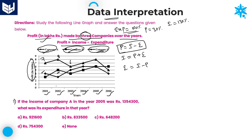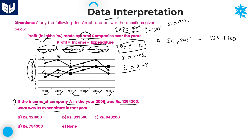Now look at the first question. If the income of company A in the year 2005 is 13,54,300, what was its expenditure? This particular income value is 13,54,300. What we need to calculate is expenditure, which is nothing but income minus profit.